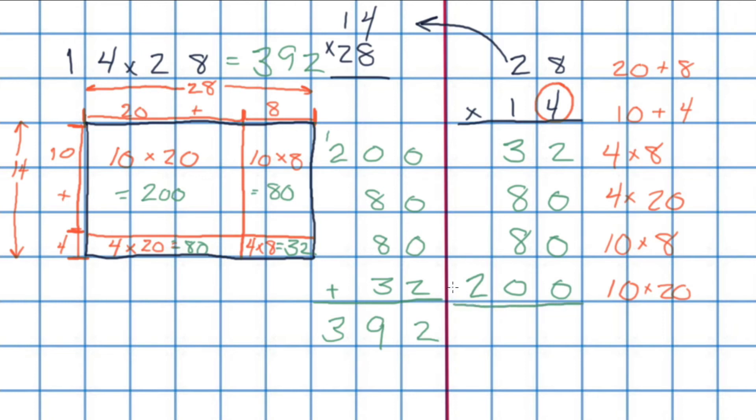Our final step now, slightly different order, but we'll add it together as we did before. 2 plus 0 plus 0 plus 0 is 2. 3 plus 8 is 11. Plus 8 is 19. Carry the 1. And 2 plus 1 is 3. So again, we've done it two different ways using two different models, but we end up with the same solution, 392.